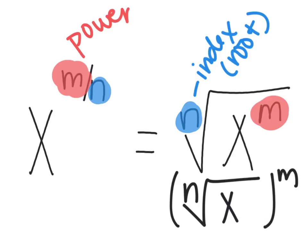So if your index is 2, then you're taking the square root. If your index was 4, you're taking the fourth root. If your index was 3, you're taking the third root.